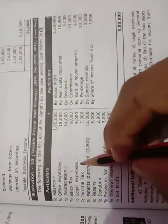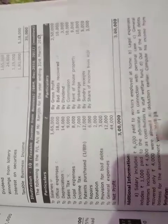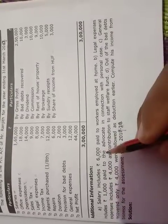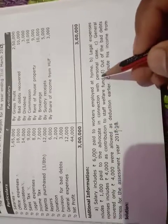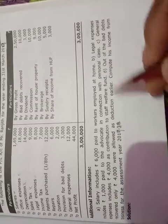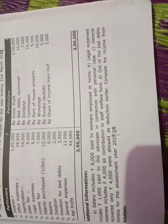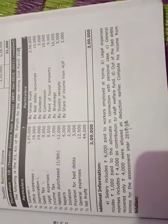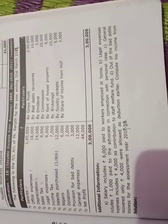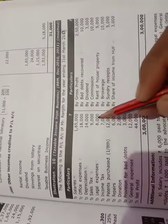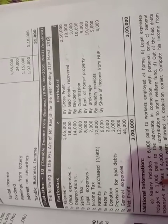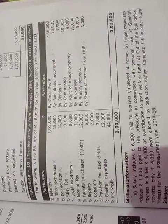Next, legal expenses — there is an adjustment. Legal expenses includes 1,000 paid to advocate in connection with a personal case. The owner has a personal case and he is paying legal expenses for it. So out of 8,000, the 1,000 can be considered as a disallowable expense.